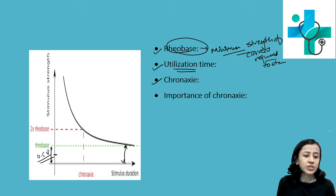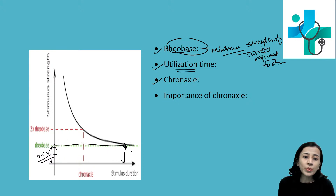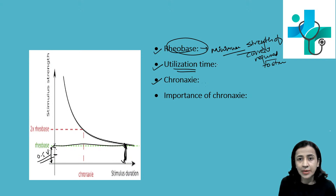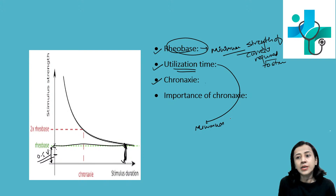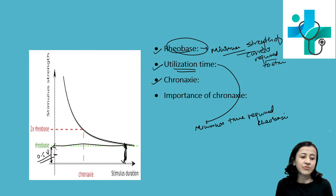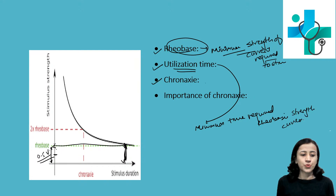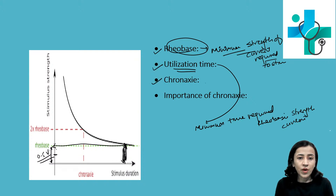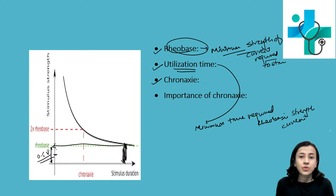Utilization time is the minimum time required to stimulate the tissue when rheobase strength of current is applied. So, utilization time is the minimum time required by rheobase strength of current to stimulate the tissue.